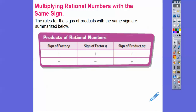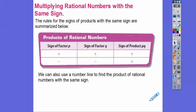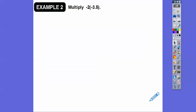The rules for multiplying numbers with the same sign: a positive times a positive is positive, and a negative times a negative is also positive. So if they have the same signs, the product is positive. If they have different signs, the product is negative. We can also use a number line to find the product of rational numbers that have the same sign.